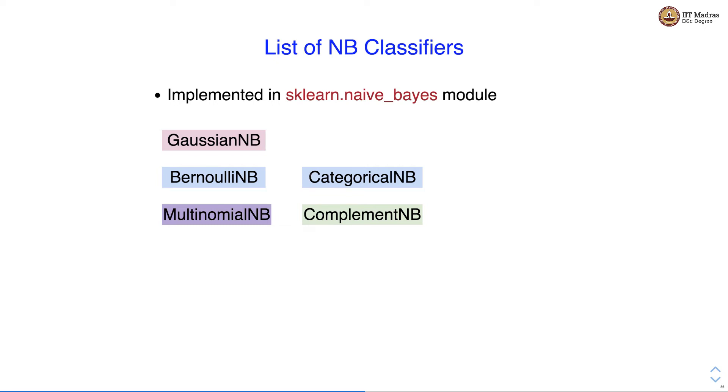If our features are distributed according to categorical distribution, we use Categorical Naive Bayes classifier.